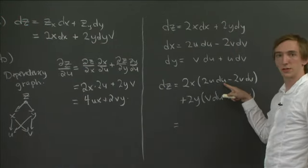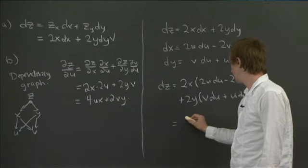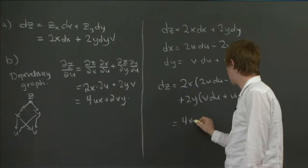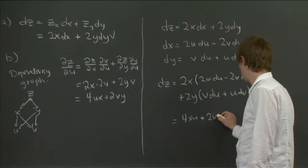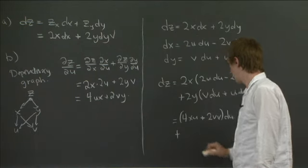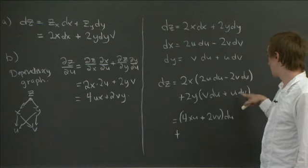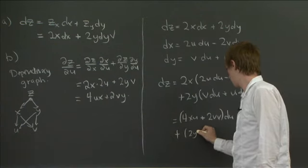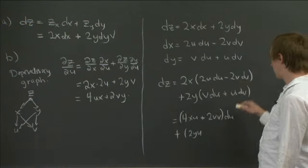So then, now we just expand everything out using, just expanding these out. And so we get, okay, so let's collect all the things involving du. So if we collect all the things involving du, we have 4, 2 times 2 times x times u, 4xu plus 2yv. This whole quantity times du. And then if we collect the terms in dv, we have, so we have 2yu. So that's coming from here, and then we have a minus 4xv.